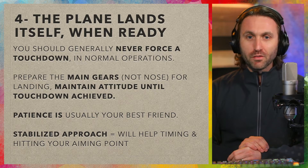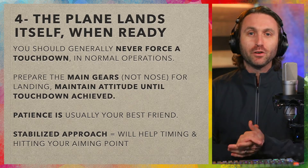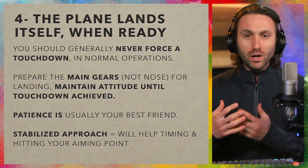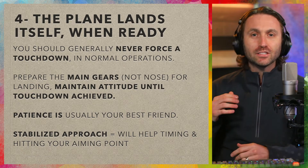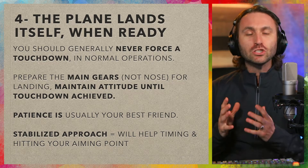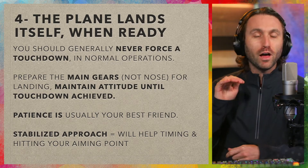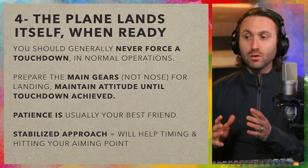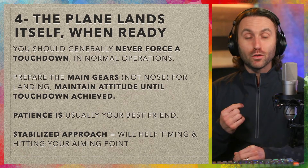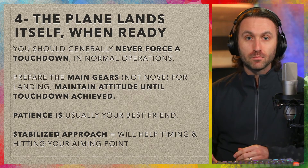Patience is generally your best friend when trying to make smooth landings. Forcing the touchdown comes from being impatient and trying to rush the process. Instead, don't force the airplane onto the runway — it's generally going to land. So long as you're holding it there and putting it in position to make a nice, smooth, safe landing, it's going to take care of itself. Fly it all the way down to the runway and just paint it on. A stabilized approach also helps your timing and helps you hit your aiming point, which is critical in short-field operations.